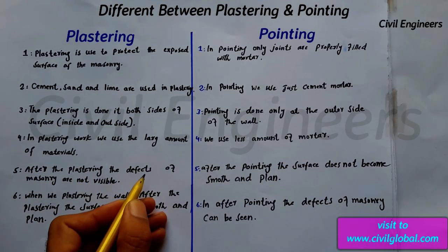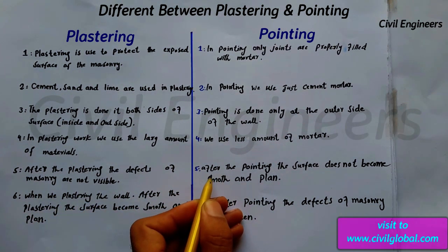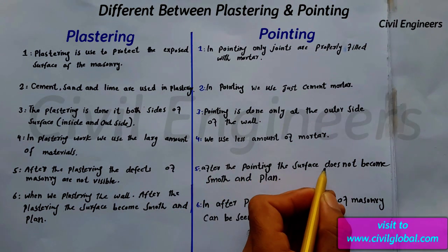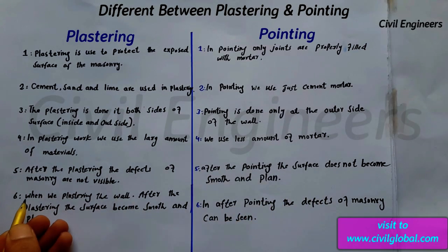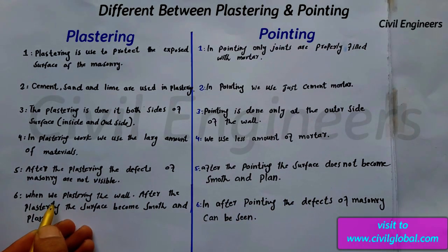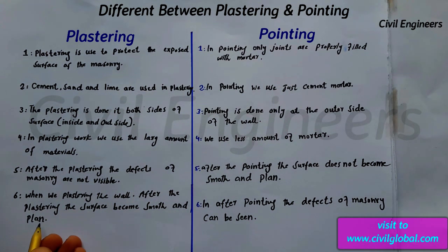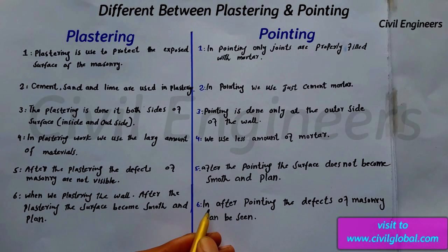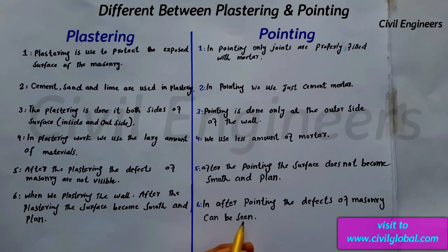Five, after plastering, the defects of the masonry are not visible. But in pointing, after the pointing, the surface does not become smooth and plain. Six, when we plaster the wall, after plastering the surface becomes smooth and plain. But after pointing, the defects of the masonry can be seen.